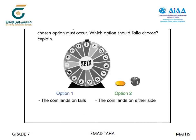As students compare the desired outcomes for the coin flip, listen and look for students who recognize that the outcome for Option 2 is certain to occur, which means it has a probability of 1. If the coin flip were the only component of the game, then Talia should choose Option 2.